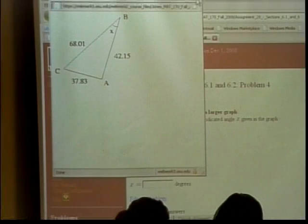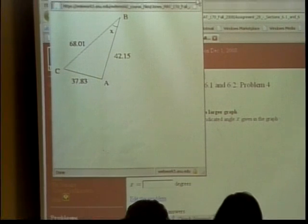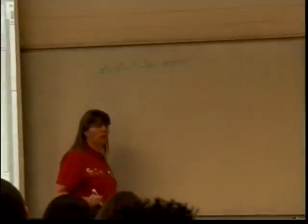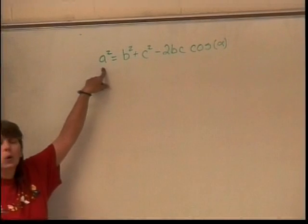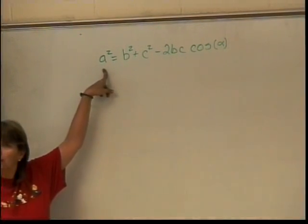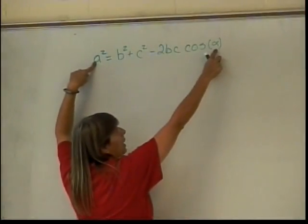So, remember your law of cosines was a squared equals b squared plus c squared minus 2bc times the cosine of alpha, or in our case it's going to be x. Which side is going to be our a? The 37 one, because it's opposite the angle. Remember, these two have to be opposite each other.